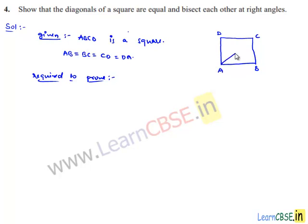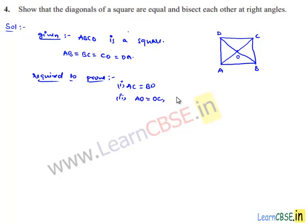The diagonals are AC and BD. We are first required to prove that AC is equal to BD, and second, that they bisect each other at right angles. Let us assume that diagonals intersect at point O. We need to prove that AO is equal to OC and OB is equal to OD, and that they bisect each other perpendicularly. We also have to prove that angle AOB, angle BOC, angle COD, and angle DOA are all equal to 90 degrees.